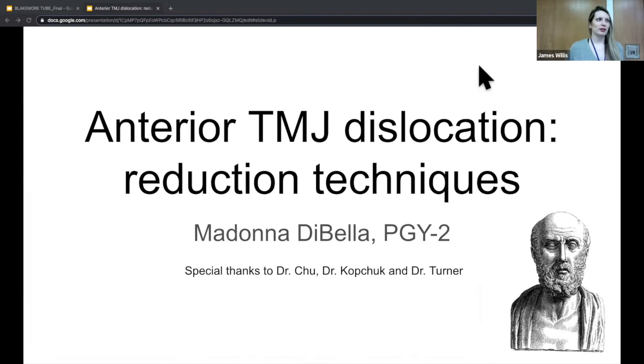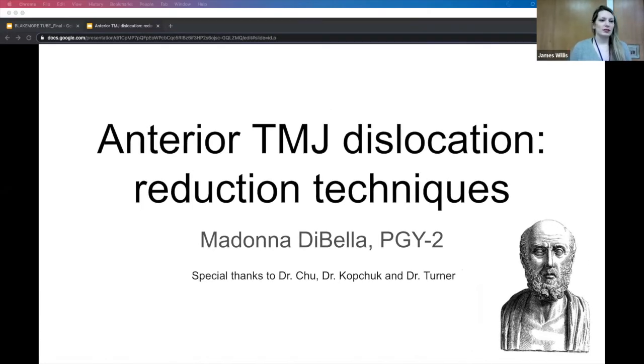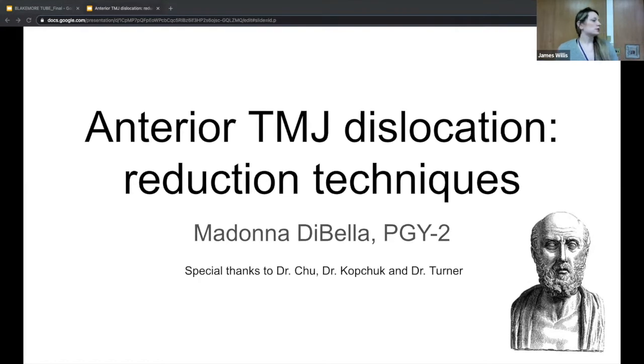Good morning. I'm Madonna, one of the second years. I'm going to talk today about a topic that we don't see very frequently, but it's a good topic to prepare for when the patient comes in, and that's anterior TMJ dislocations and how we reduce them. Specifically, I'll be talking about the anatomy of the joint, the pathophysiology of how the joint becomes dislocated, how we reduce it, and what to do after we reduce it. That man in the corner there is Hippocrates, and he actually first described the technique for reduction that we still use today. Special thanks to Drs. Chu, Kopchuk, and Turner for feedback on this lecture.